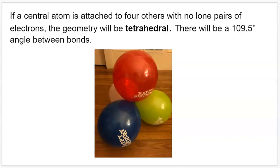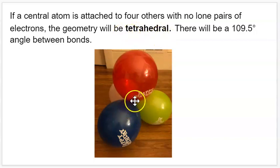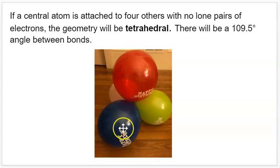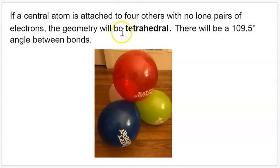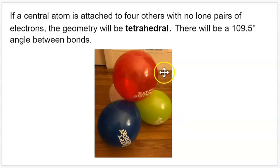If a central atom is attached to four others with no lone pairs, we get a tetrahedral geometry. Tetrahedral means four faces — tetra is a prefix meaning four, and hedra means face. It's a four-sided pyramid with three faces on each side and one on the bottom. In this geometry, we have 109.5-degree angles between the bonds.